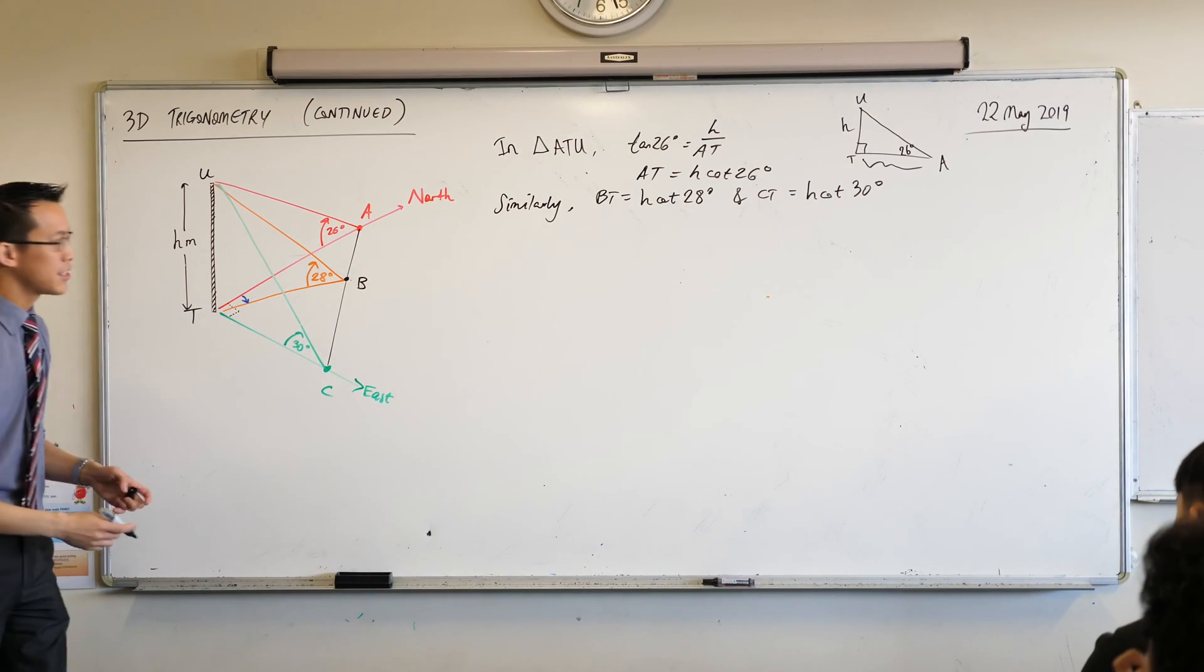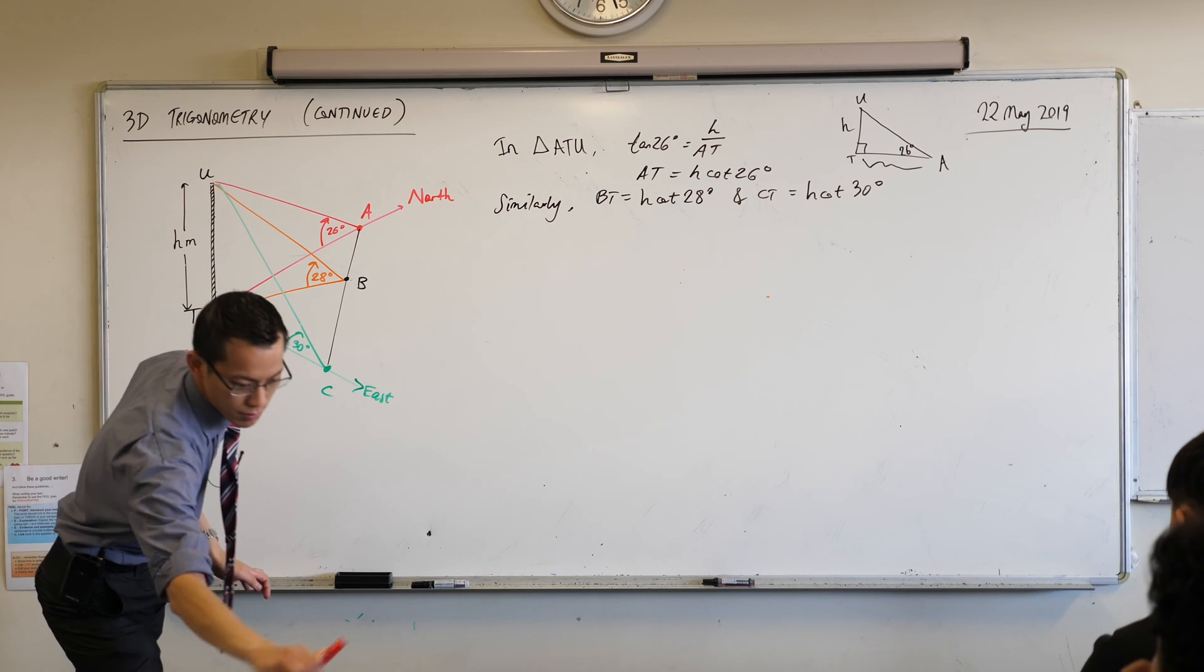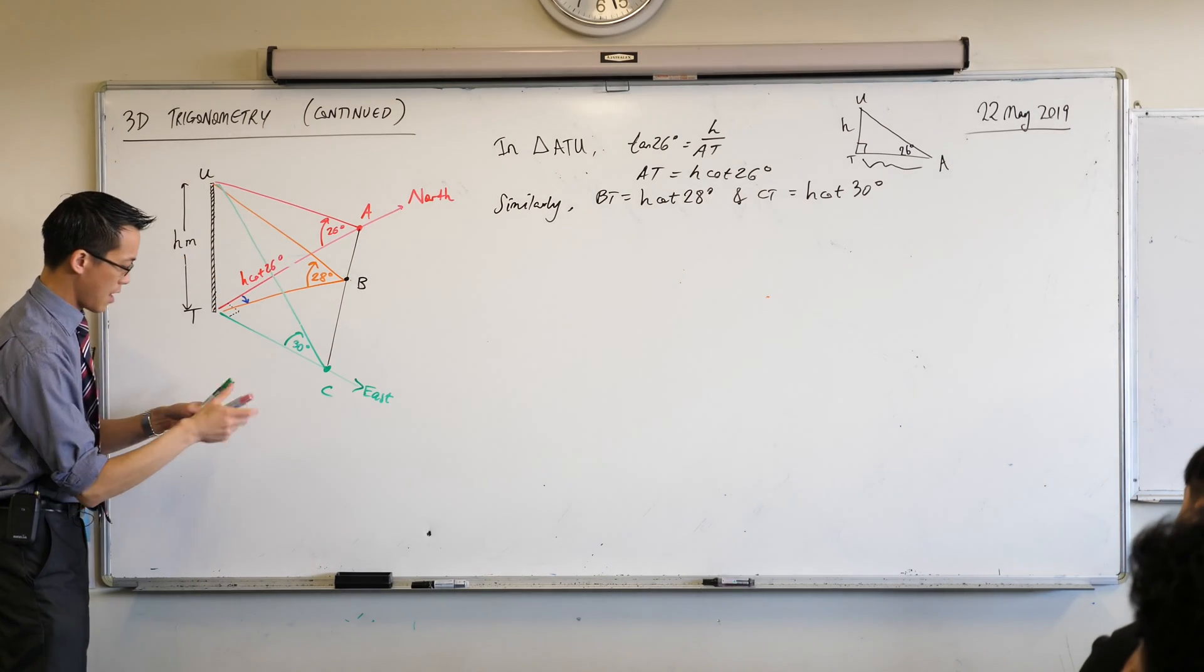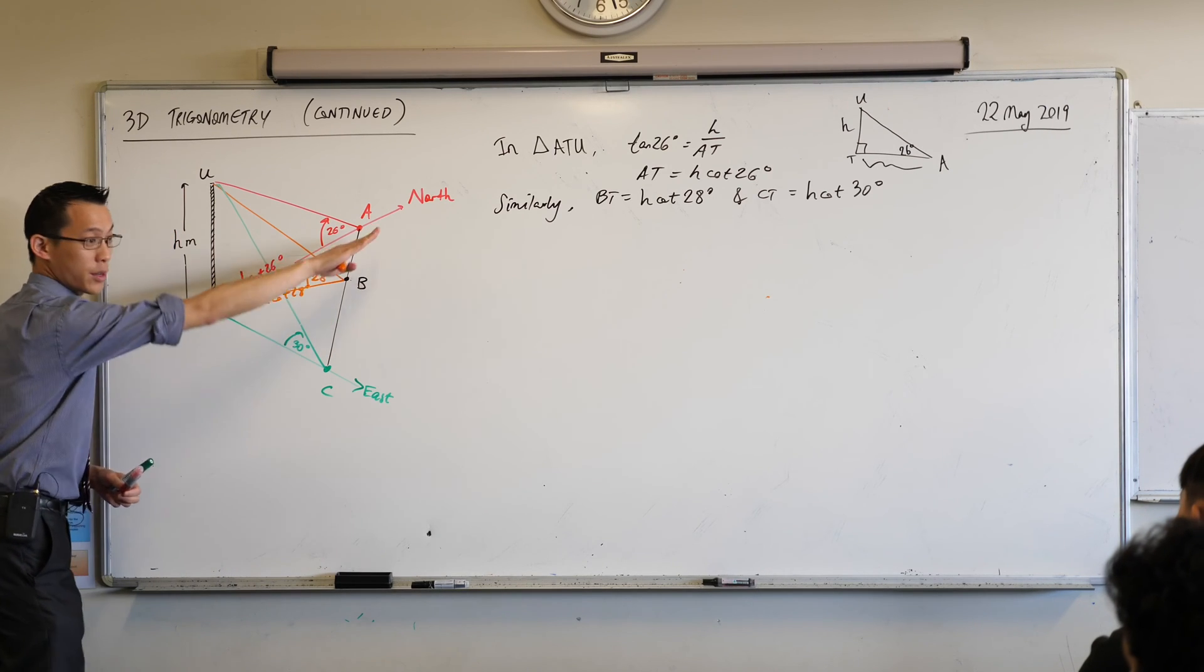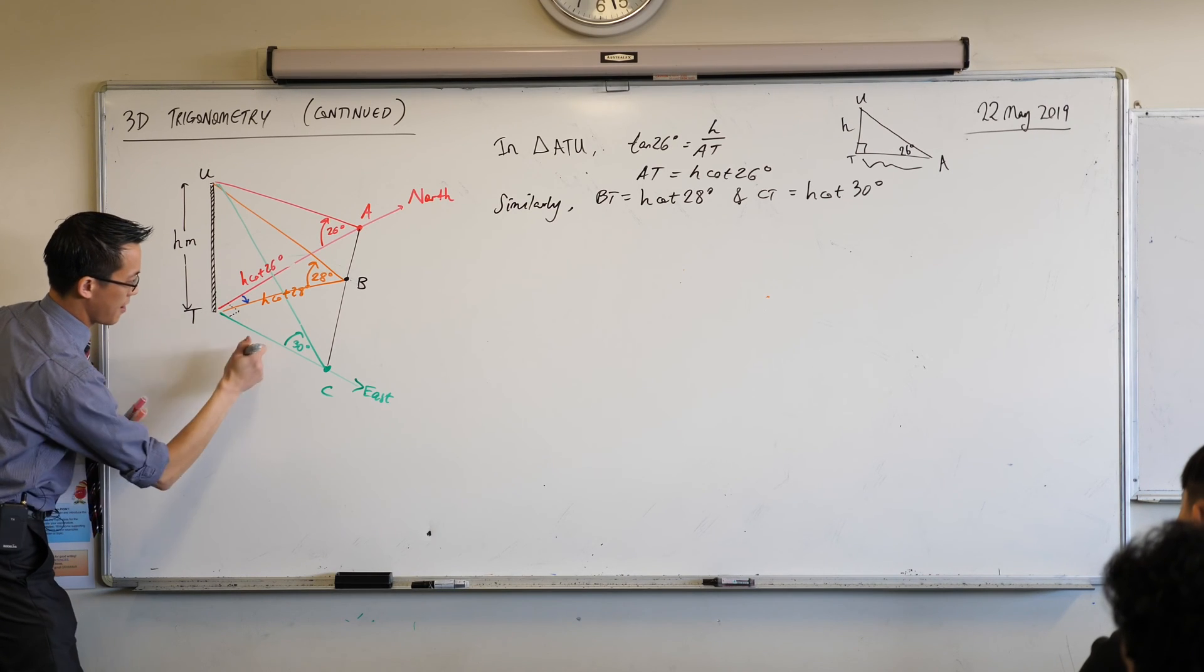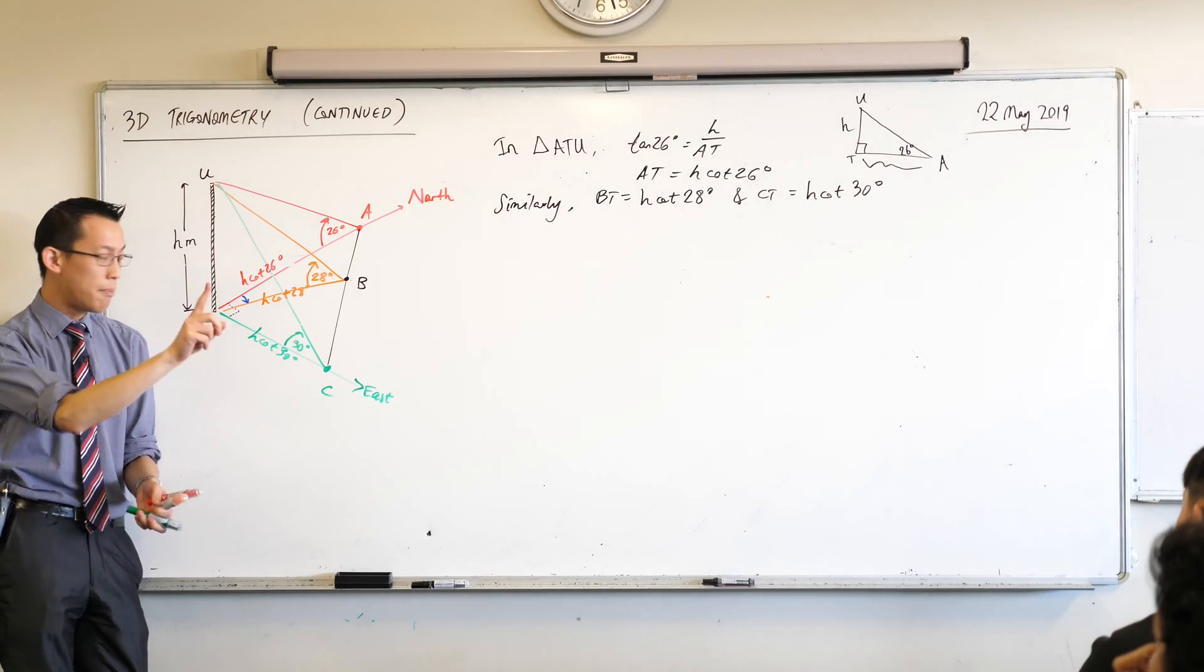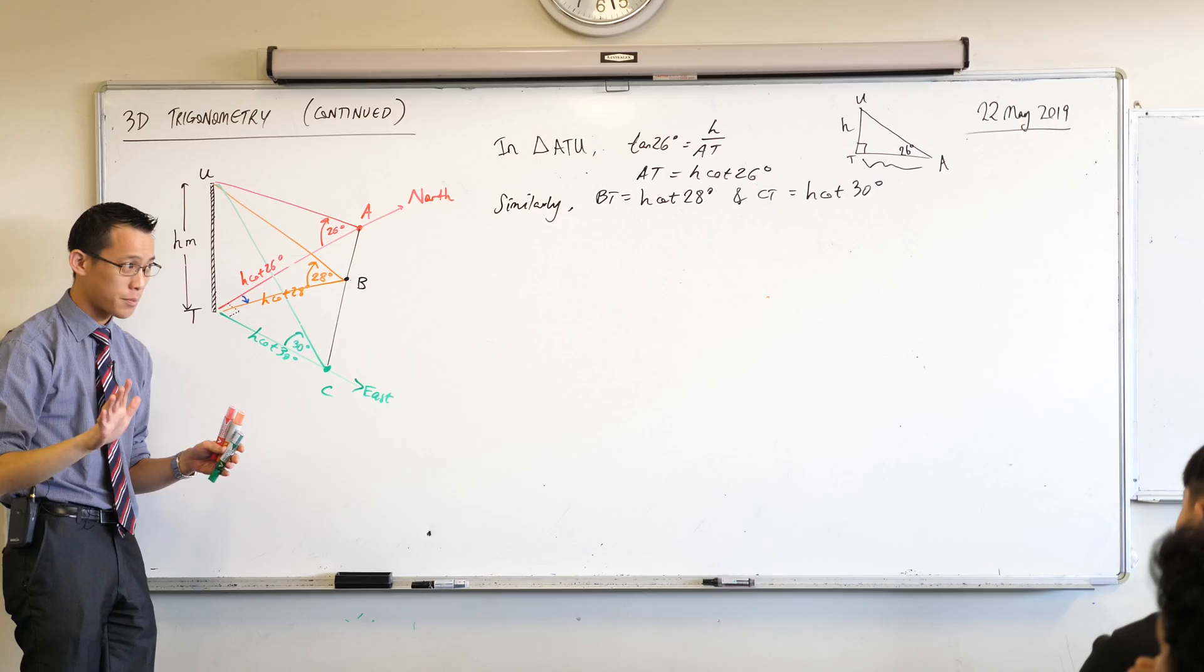Okay. So now I've got these three lengths on the ground. I am going to put these onto here. Here we go. So I've got H cot 26 going up this way. I've got H cot 28 sort of in the middle of the diagram and that way. And then lastly I've got H cot 30 degrees facing this way. Okay. So this is helpful. I don't know how tall this tower is but I know how long these are in relation to each other. Are you with me so far?